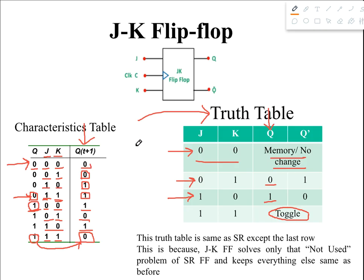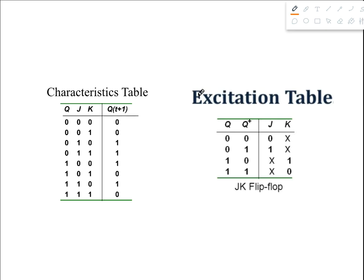Now we'll derive the excitation table for JK flip-flop using the characteristic table. The excitation table has two parts: in the left part we write the present state Q and next state Q+, and in the right part we write the inputs J and K. With two variables on the left, there are four combinations: 0→0, 0→1, 1→0, and 1→1.